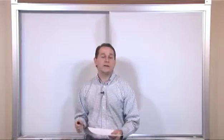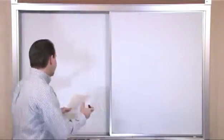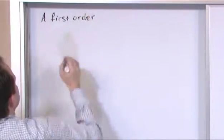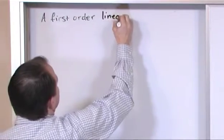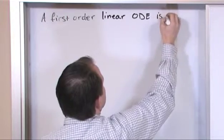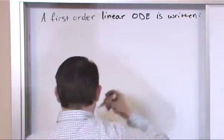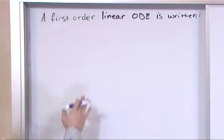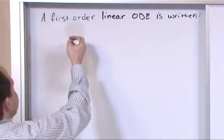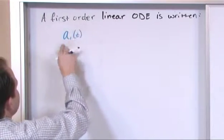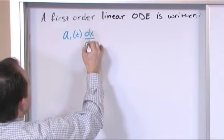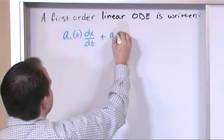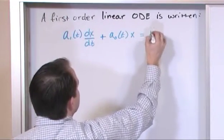So this is variation of parameters and we're only going to talk about first order linear equations. A first order linear ordinary differential equation is written like this: some function of time — call it a sub one — times the first derivative of x with respect to time, plus some other function of time times x, is equal to a pure function of time. X is what we're trying to solve for in the end.